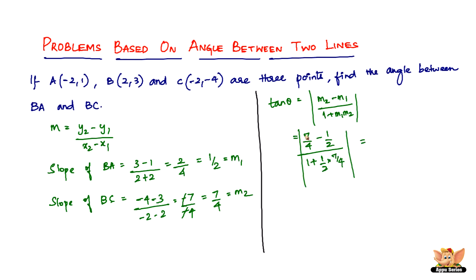So 7 by 4 minus 1 by 2, take LCM between 4 and 2 which is 4. So it will be 5 by 4 divided by 1 plus, 7 times 1 is 7, 7 divided by 8, 1 plus 7 by 8.